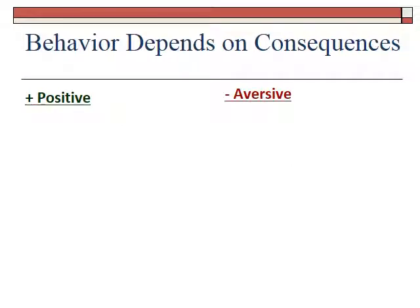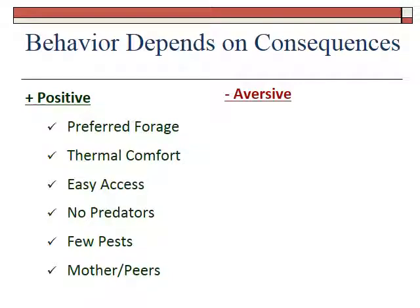So let's think about those consequences. If a habitat had positive consequences, what would those be? Positive consequences from a habitat might include a place with a lot of preferred forages, a place that's thermally comfortable, easy to get to, has low predator risk, few pests such as biting insects, and a place where mother and peers are — because animals, at least herbivores, tend to be gregarious, and when mother and peers are present, that's comforting.